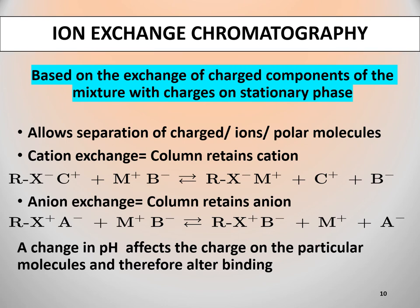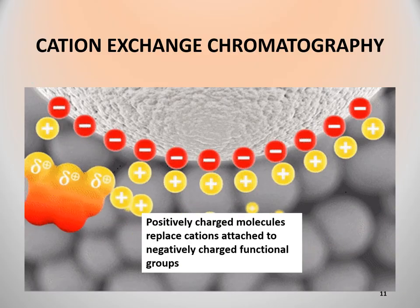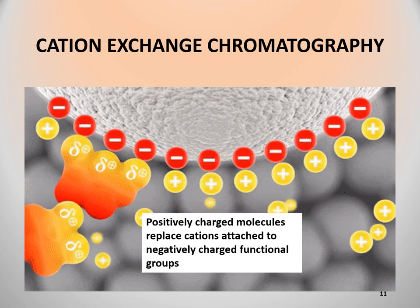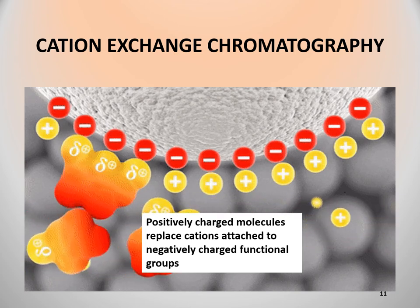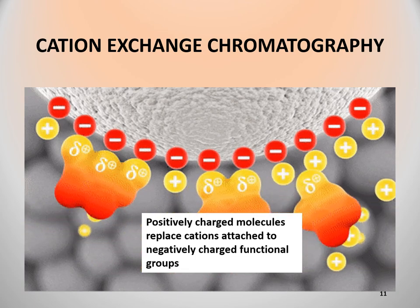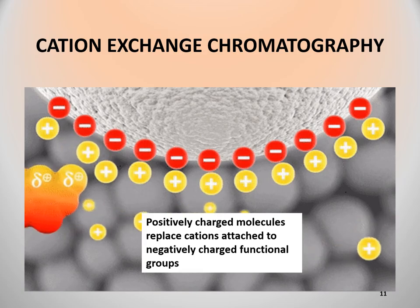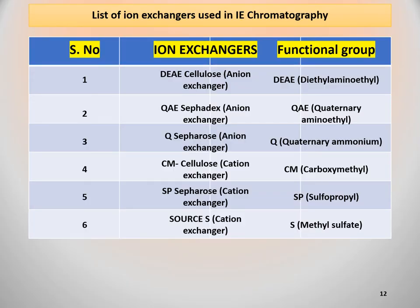The same thing happens in an anion exchanger. The stationary phase displays a positively charged functional group that is attracted towards a negatively charged anion. M-positive and B-negative are the components of the mixture to be separated. In this case, A-negative will be replaced by B-negative and will be eluted from the stationary phase. A change in pH affects the charge on particular compounds and therefore alters their binding. This is the list containing common cation and anion exchangers and the functional groups displayed by the stationary phase.